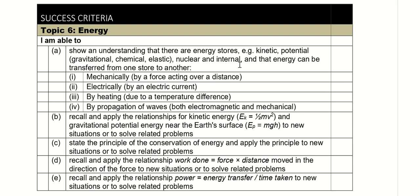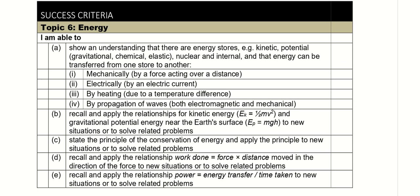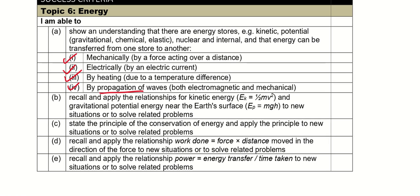For this video we'll be going through the success criteria of energy. There are four energy transfer processes: mechanically, by electric current, by heating due to a temperature difference, and by propagation of waves — both electromagnetic and mechanical. Propagation can be treated as a motion of waves.